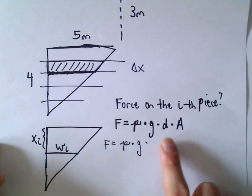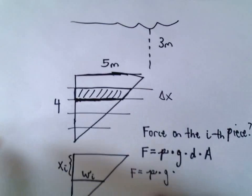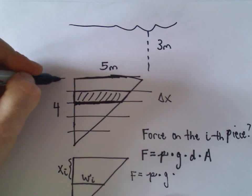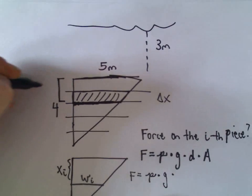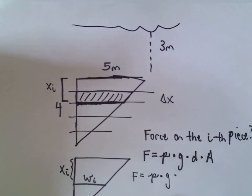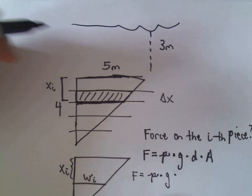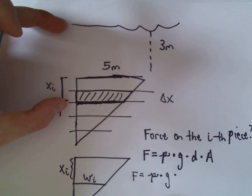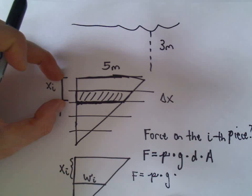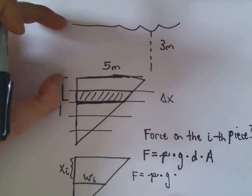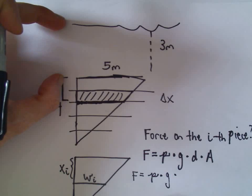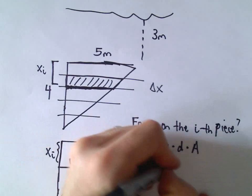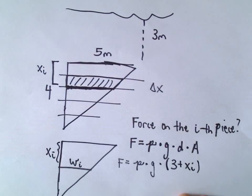Now, if you want an expression for the depth: I'm measuring x from the top of the plate, so if I've gone down x sub i units, the total depth of this slice is x sub i units to reach the top of the plate plus another three units since the plate is three meters below the water. So the depth is approximately 3 plus x sub i.